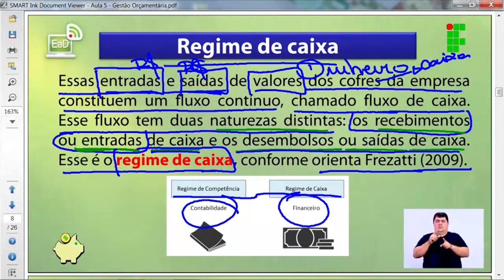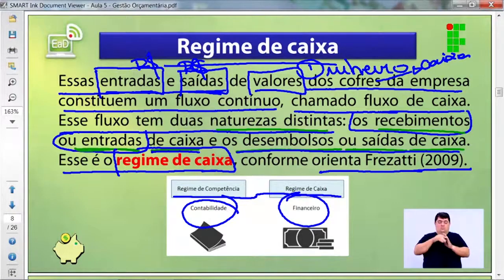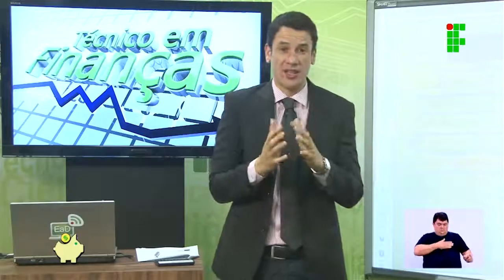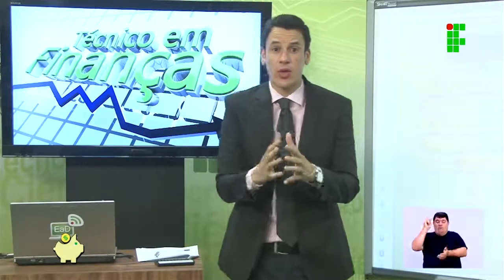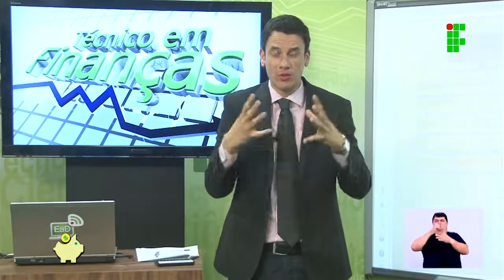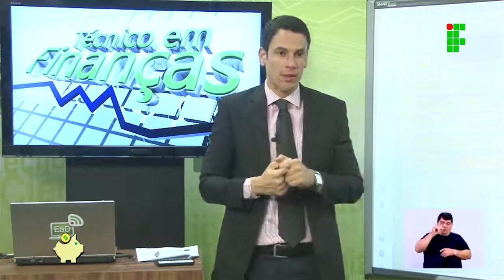O regime de competência, associado à contabilidade, está ligado à visão do contador. O regime de caixa financeiro está associado ao real — é o cenário, o que acontece no seu dia a dia. E é o seu dia a dia que vai gerar as informações contábeis.